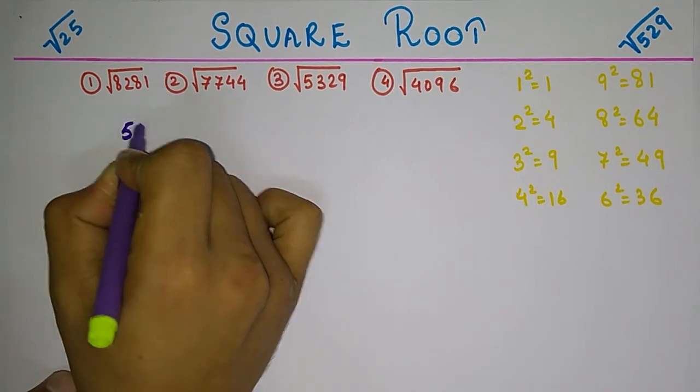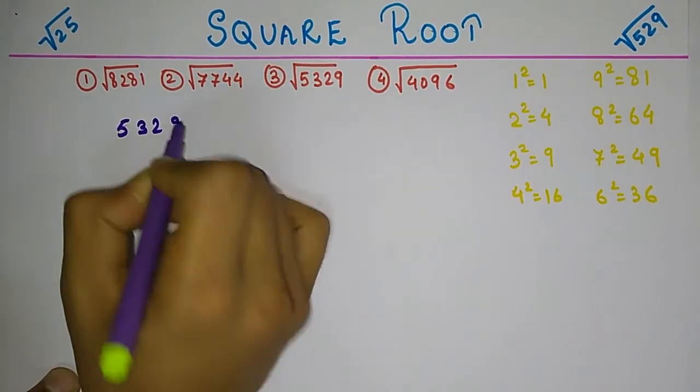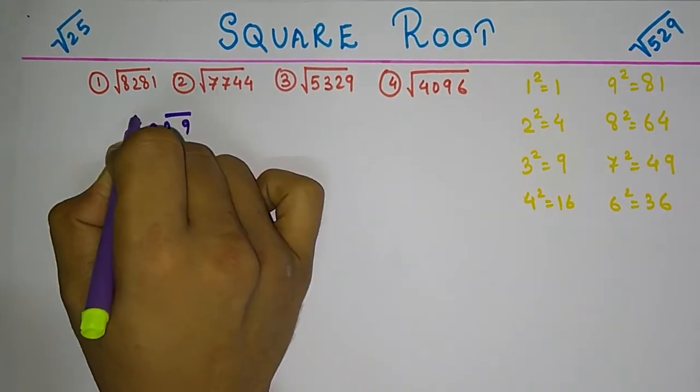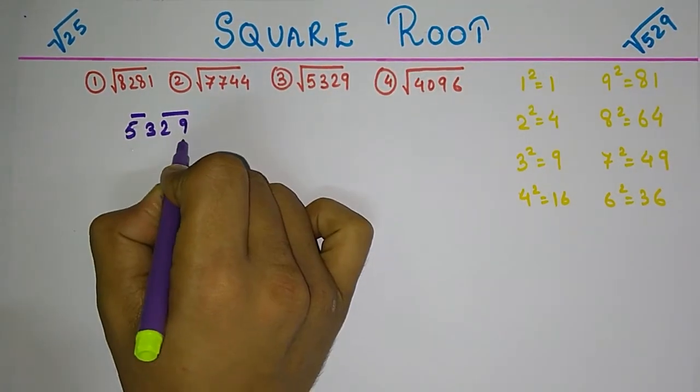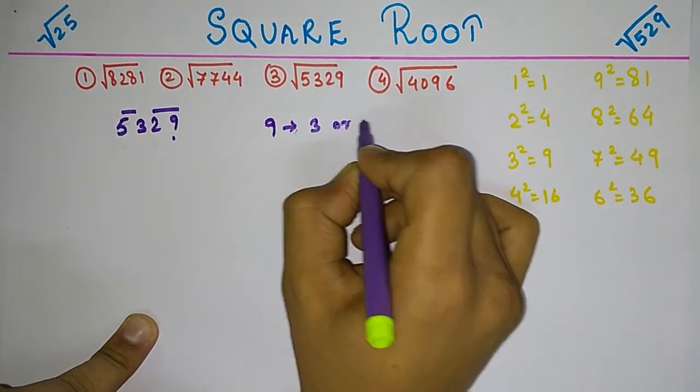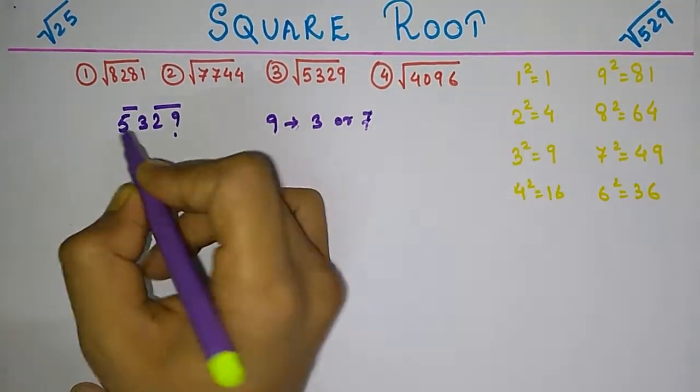The algorithm remains the same: divide the number into pairs, check the last digit. 9 comes from the square of 3 or the square of 7. Now for the first part, we have to find the square which is closer to 53, and that is 7 squared.